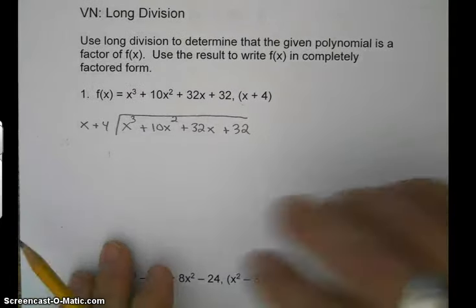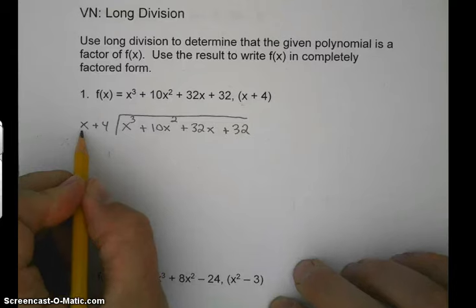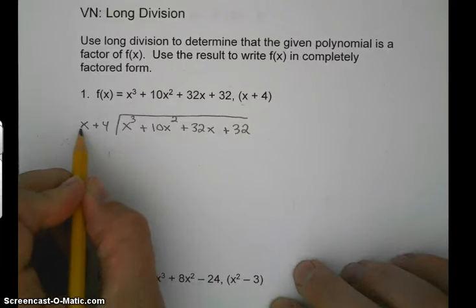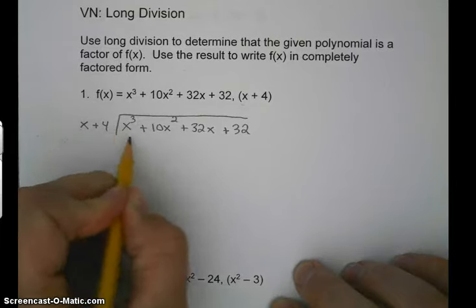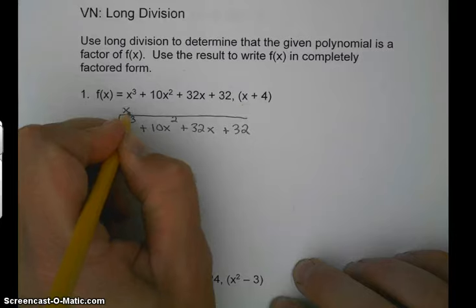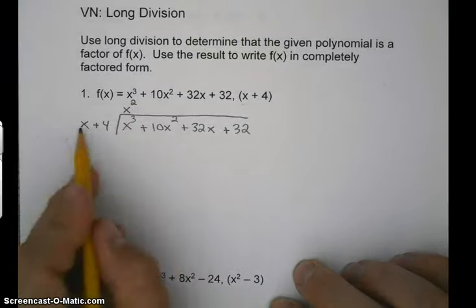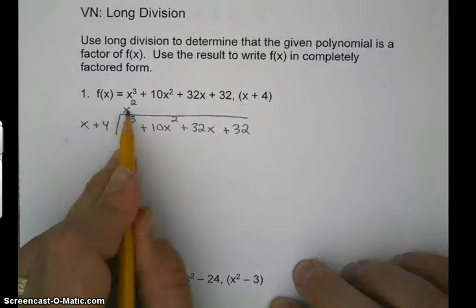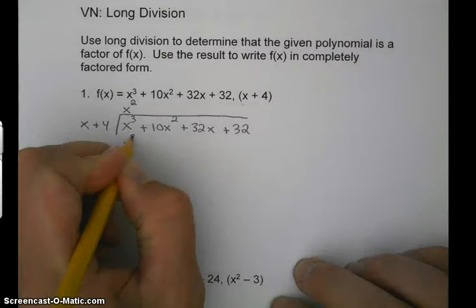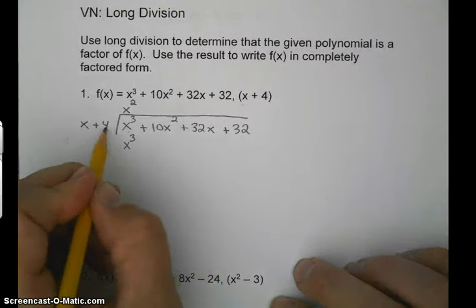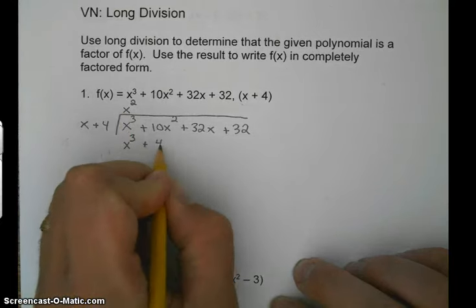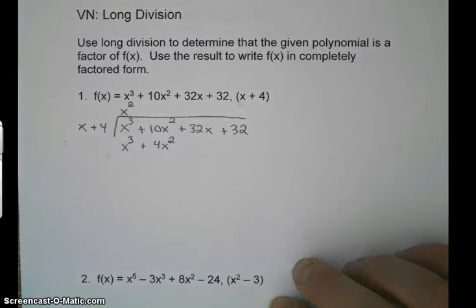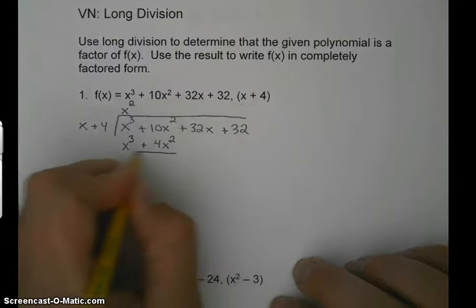In order to do this, we start with the x and we ask ourselves, x times what will give us x cubed? So we know that x times x squared will give us x cubed. And then we take 4 times x squared and we put that underneath our squared term. Then we subtract.